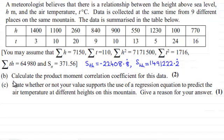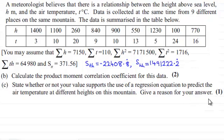For part B, we're asked to calculate the product moment correlation coefficient for this data, for two marks. And then in part C, state whether or not your value supports the use of a regression equation to predict the air temperature at different heights on this mountain, and give a reason for your answer for one mark. If you'd like to have a go at this and haven't done so already, just pause the video.